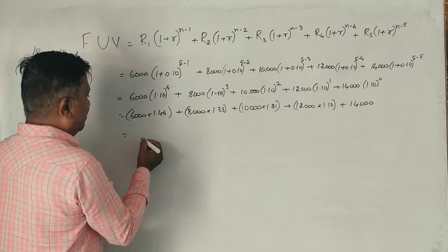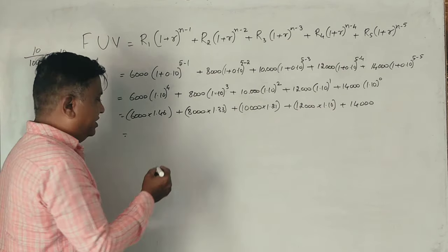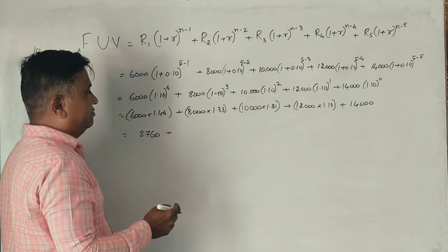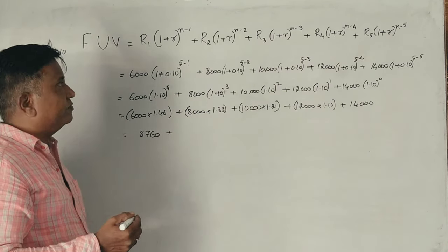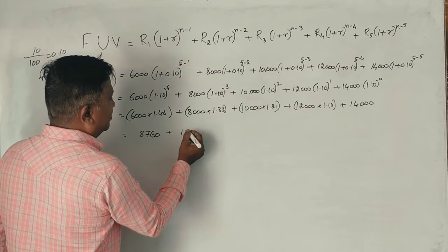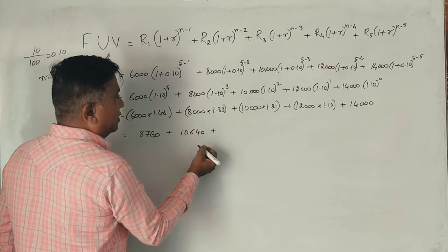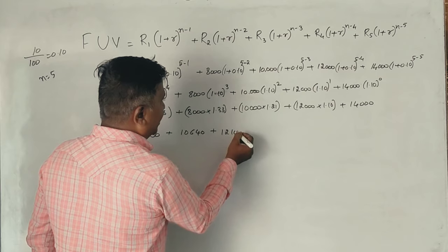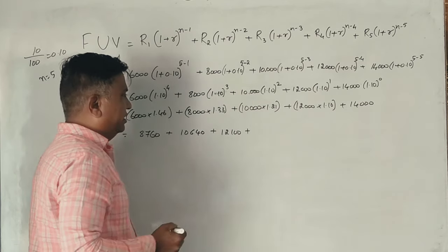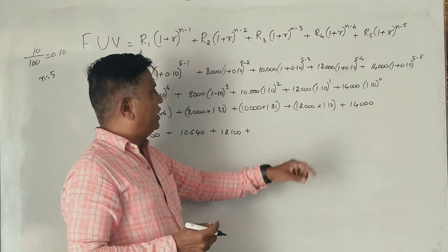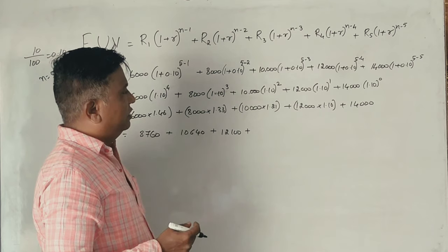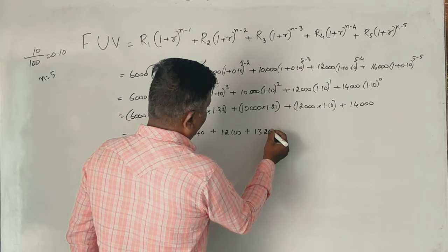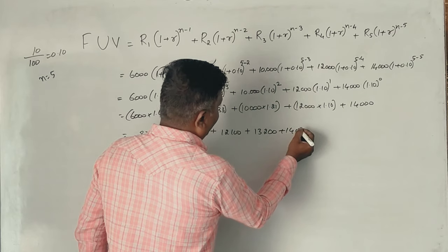So: 6,000 into 1.465 = 8,760; next is 10,640; this one is 12,100. Then 12,000 into 1.10 = 13,200. Plus 14,000.